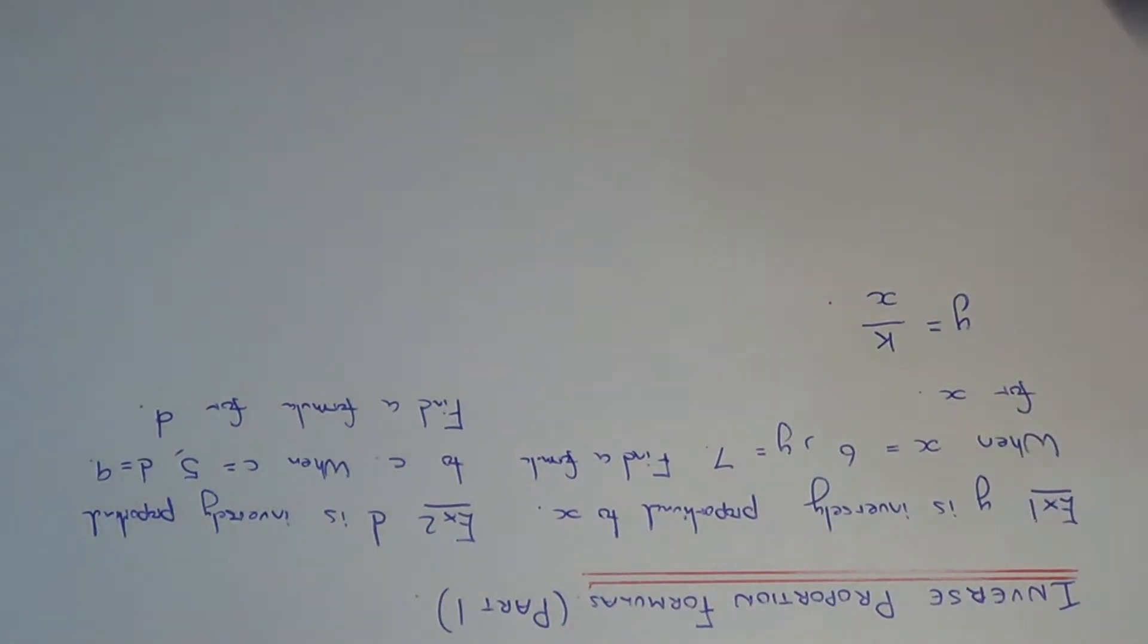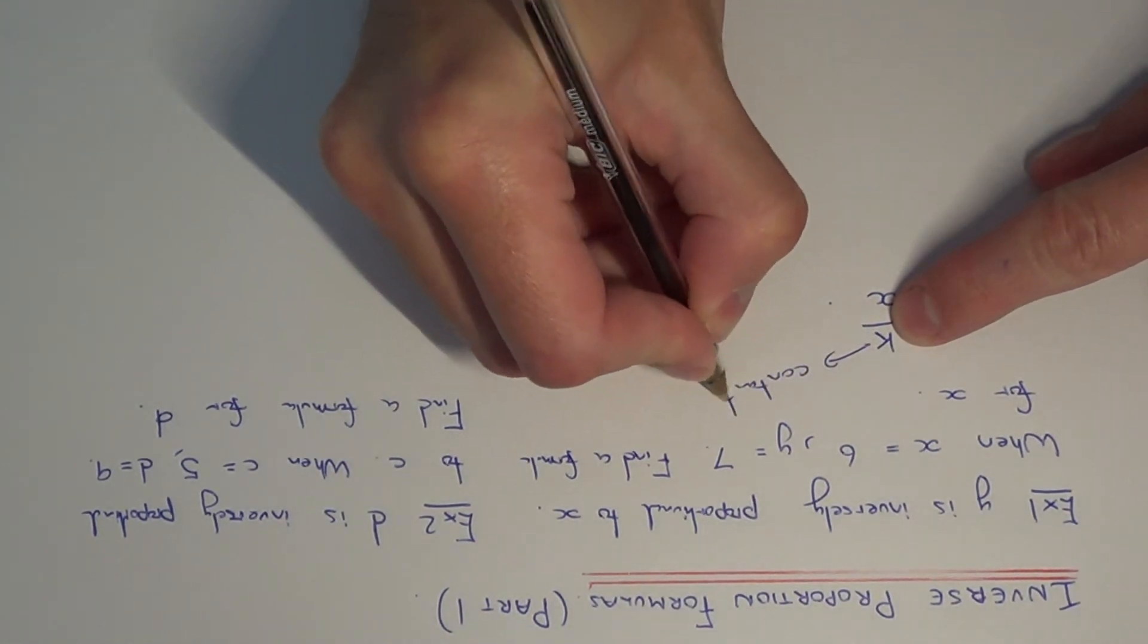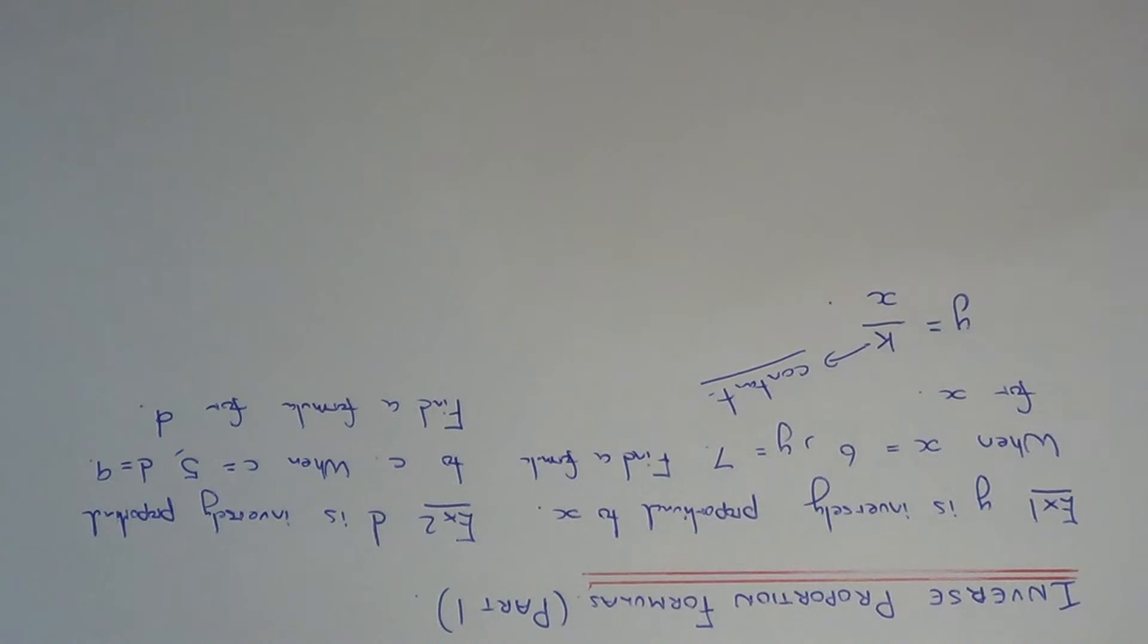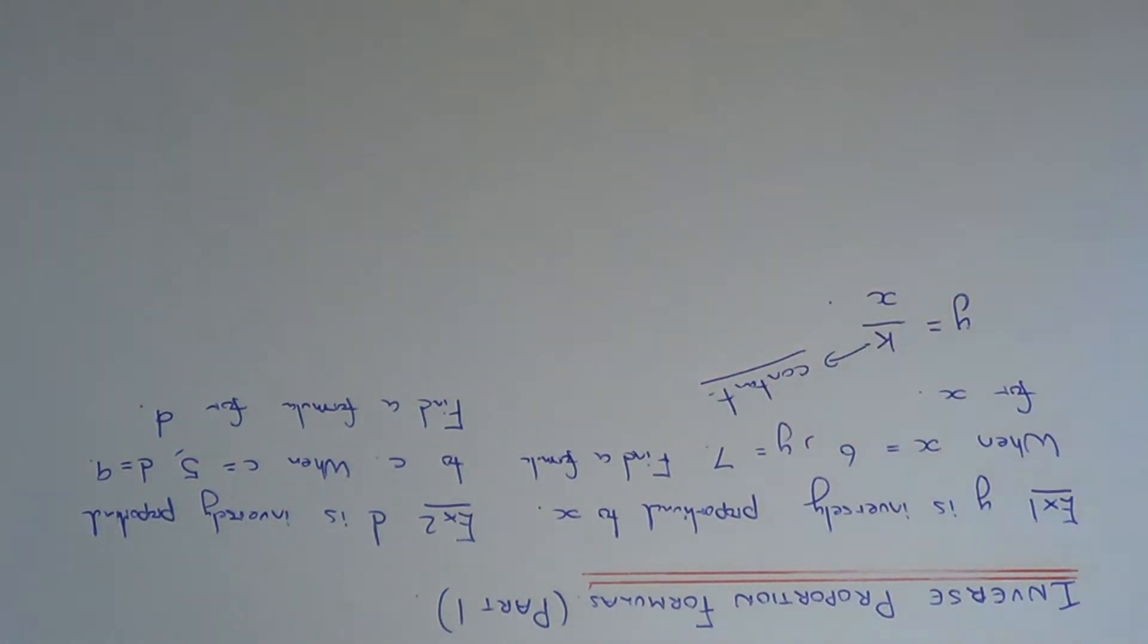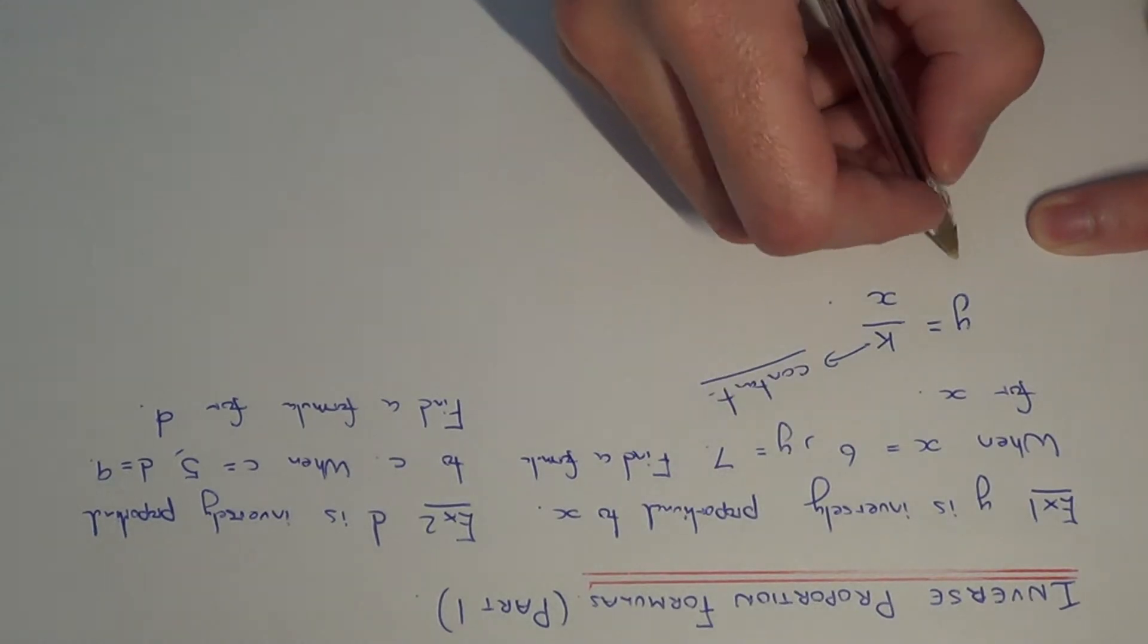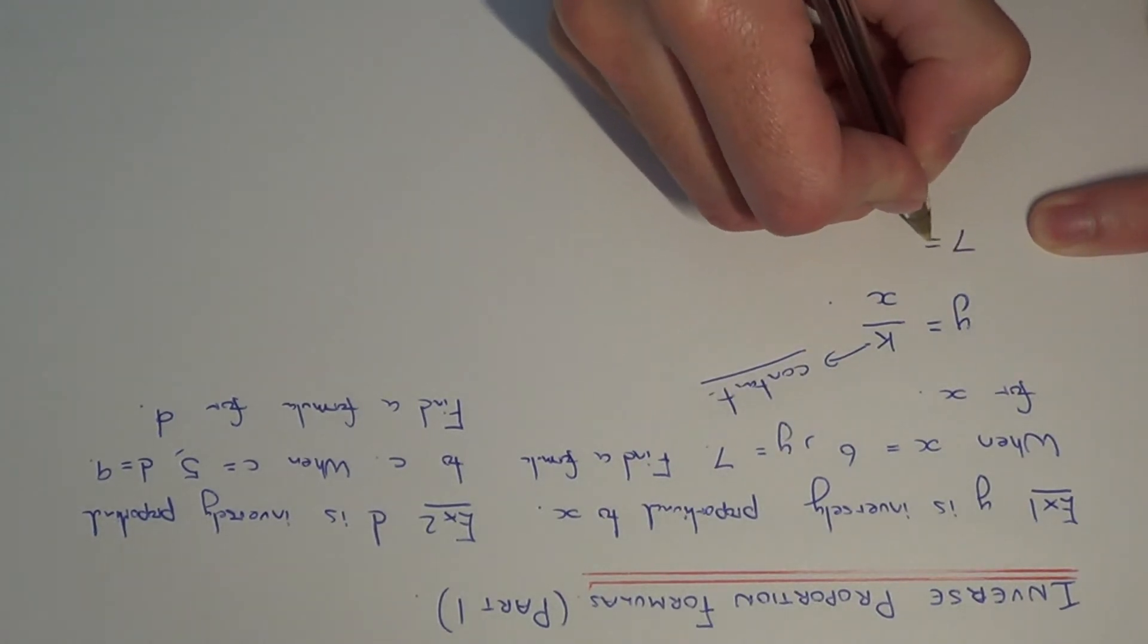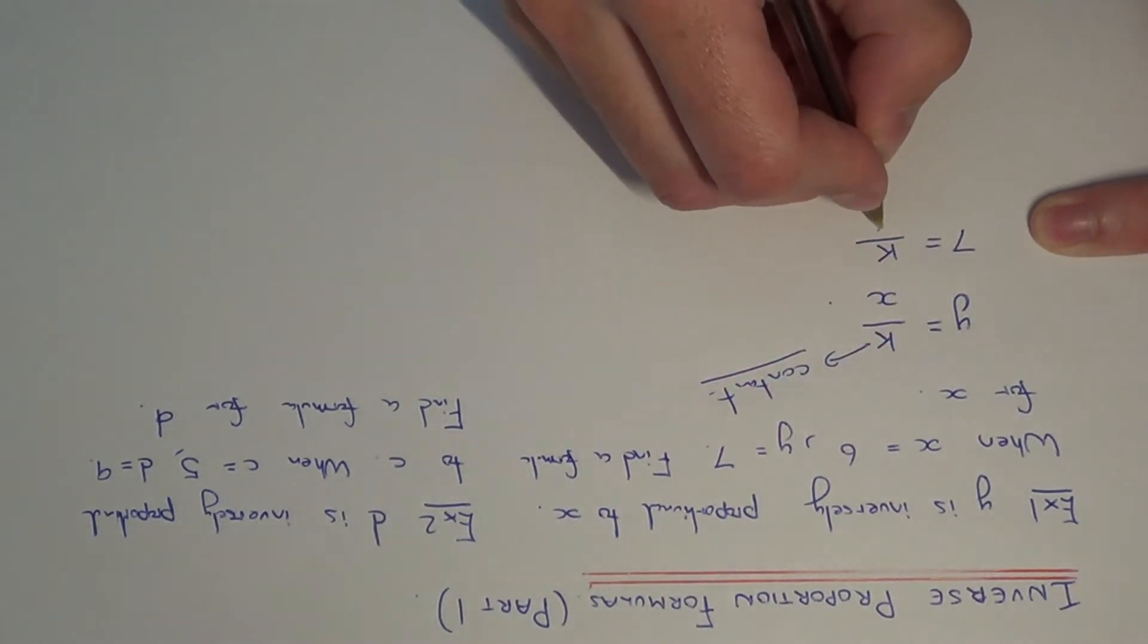And what we need to do then is work out the value of k. This is known as the constant of proportionality, and we find the constant by substituting the two numbers given in the question. So we know that x is equal to 6 and y is equal to 7. So if we sub these into our formula, we get 7 equals k divided by 6.